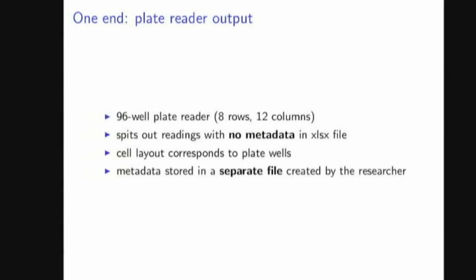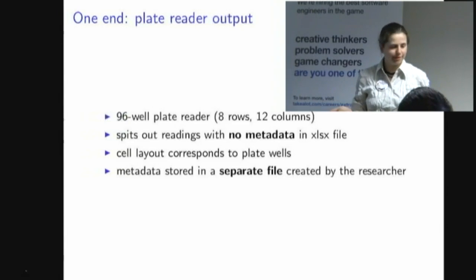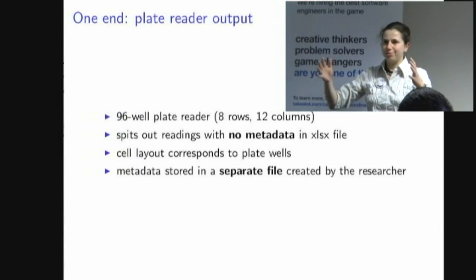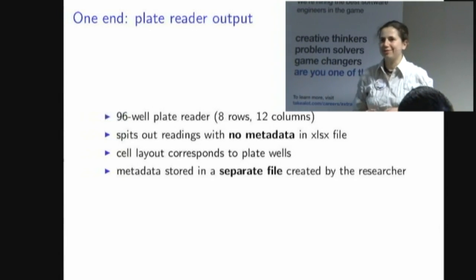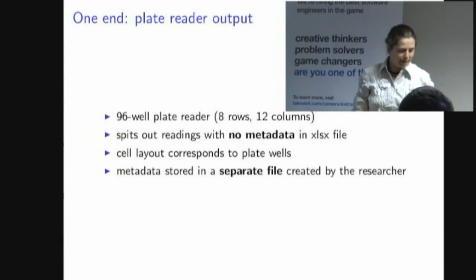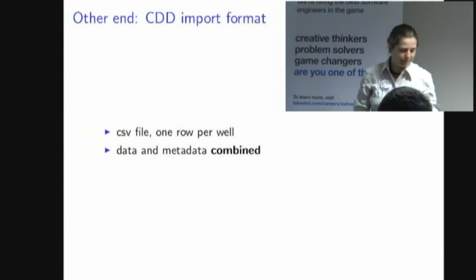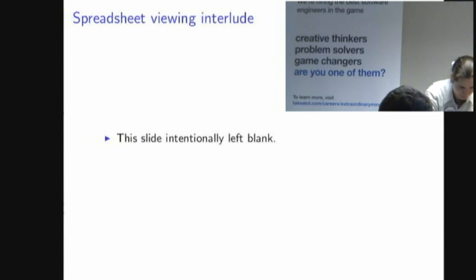At one end of this process is the plate reader. The plates that go into it have 96 wells — eight rows and 12 columns — which is apparently a standard format. The plate reader spits out the readings in an Excel spreadsheet, fortunately in XLSX format and not XLS. But there's no metadata associated with these readings; it's just a grid of numbers and the plate reader doesn't know which compounds are in which wells. That metadata is stored in a separate file created by the researcher. On the other hand, the format which needs to be imported to CDD is completely different — a CSV file with one row per well containing both the data and metadata together.